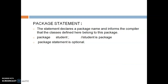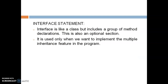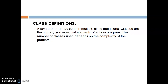Package statement is an external statement. It declares the package name and informs the compiler that the class is defined below. The keyword used is 'package' in small letters followed by the name of the package. It is optional. Import statement is also optional — if required by your program, you can use the keyword 'import' then package name dot class name. Interface statement is also optional — it is behaving like a class that includes a group of method declarations. Class definition is again an optional section. A Java program may contain multiple class definitions. Classes are the primary and essential elements of a Java program. The number of classes depends on the complexity of the program.